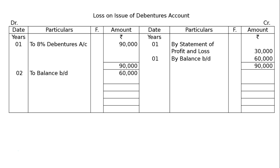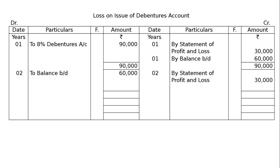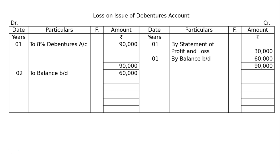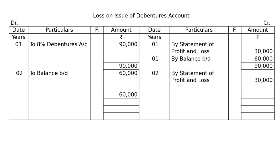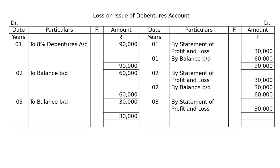In year 2, we write off again Rs 30,000 — by statement of profit and loss Rs 30,000. Totalling the debit side and finding the gap gives a balance carried down of Rs 30,000, that is Rs 60,000 minus Rs 30,000. In year 3, balance brought down is Rs 30,000, and this is the last year — the remaining Rs 30,000 is written off completely to statement of profit and loss. Both sides tally, and this is the final answer.